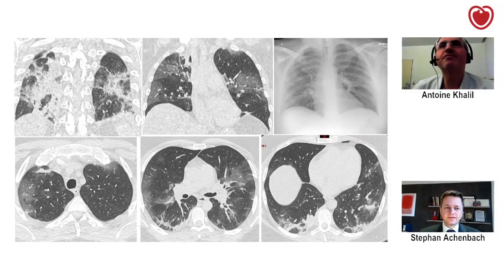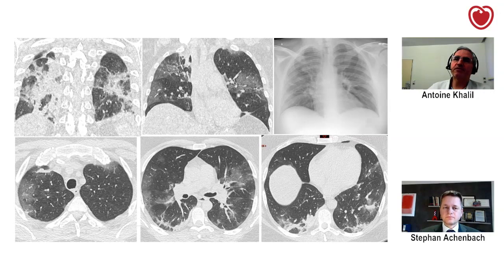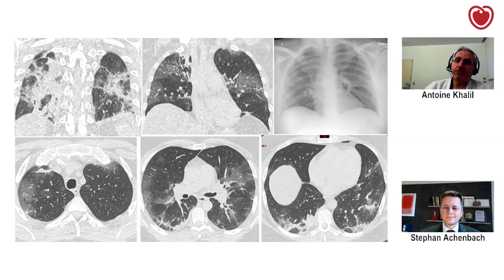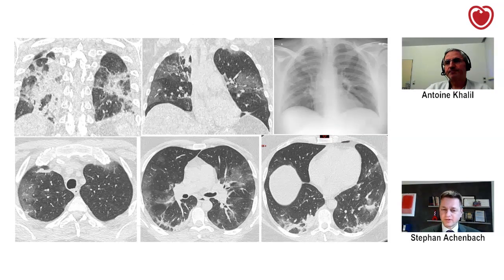Now since we have both X-ray and CT available — here we see some examples. This patient's chest X-ray shows bilateral ground glass opacities of peripheral distribution, and on CT scan we are more confident in our diagnosis and description. Ground glass opacities in the left upper lobe, for instance, cannot be seen on chest X-ray but are seen very well on CT scan. We are more confident describing lesions and following them over time.